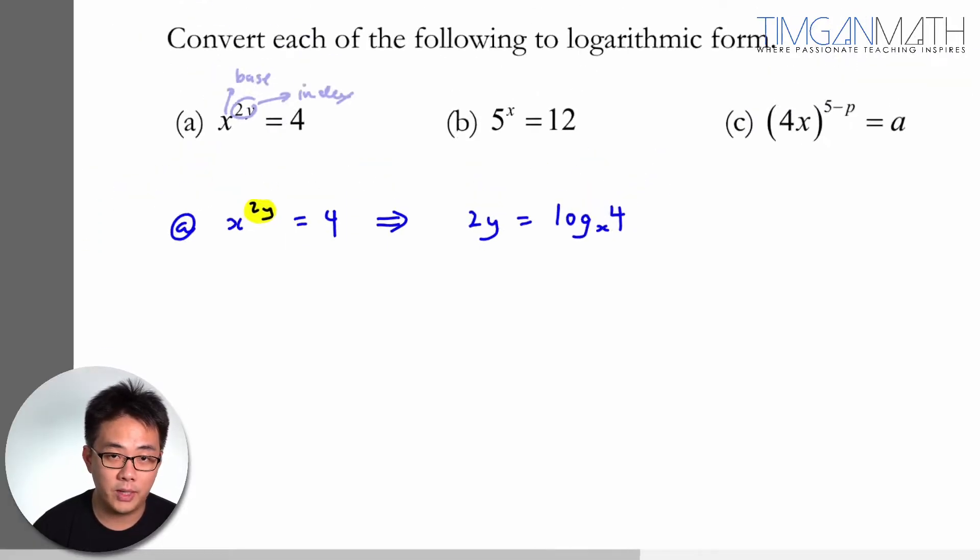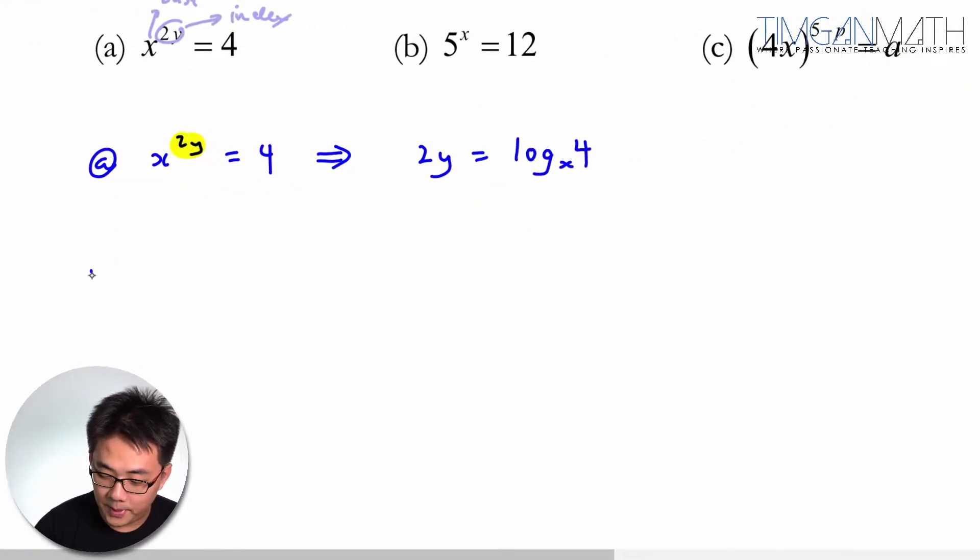Let's look at b as well. So b would be 5^x equals to 12. If you want to write this in logarithmic form, you're going to write x as the subject.